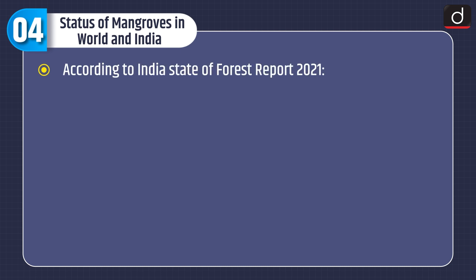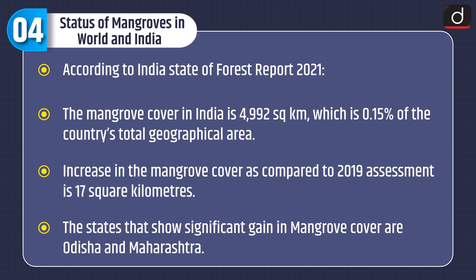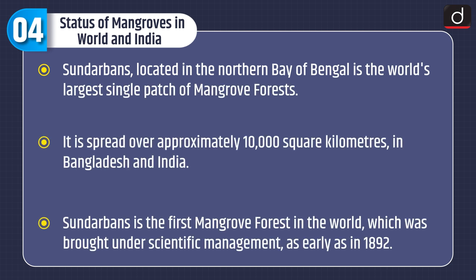According to the India State of Forest Report 2021, the mangrove cover in India is 4,992 square km, which is 0.15% of the country's total geographical area. Increase in mangrove cover compared to the 2019 assessment is 17 square kilometers. The states that show significant gain in mangrove cover are Odisha and Maharashtra. Sundarbans, located in the northern Bay of Bengal, is the world's largest single patch of mangrove forest, spread over approximately 10,000 square kilometers in Bangladesh and India.